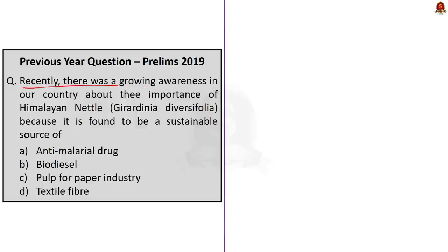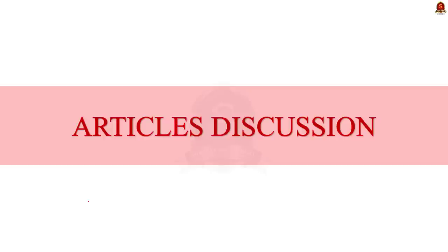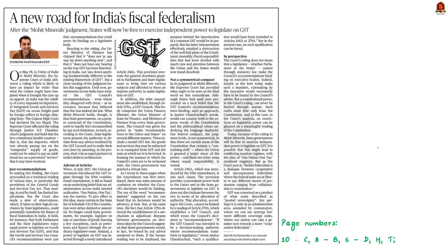Now look at the second question — the quiz question for today. Recently there was growing awareness in our country about the importance of Himalayan nettle because it is found to be a sustainable source of: option A — anti-malarial drug, option B — biodiesel, option C — pulp for paper industry, option D — textile fiber. Try to find the answer for this question. I will give the explanation in my next discussion. So concluding with the previous year question discussion, let us now move on to the news article discussion.